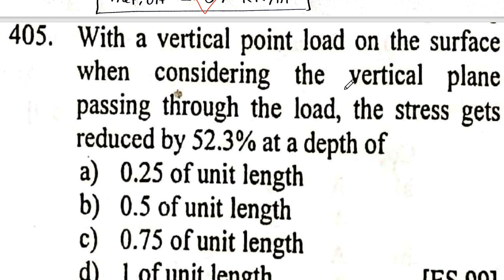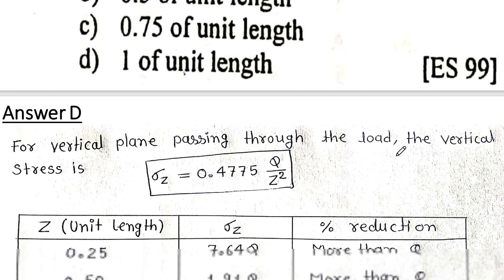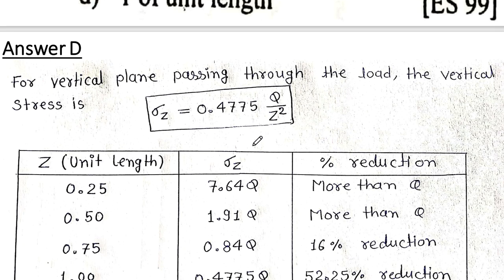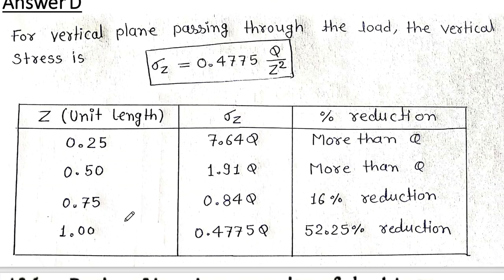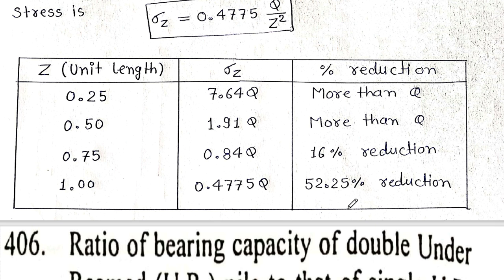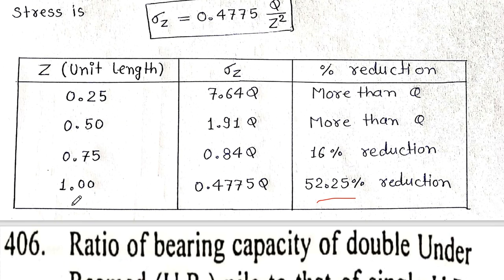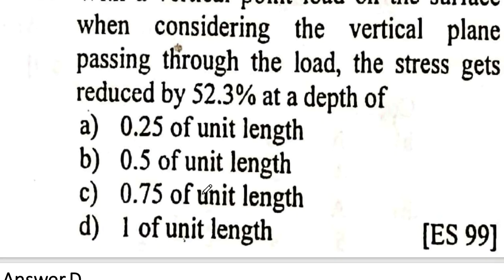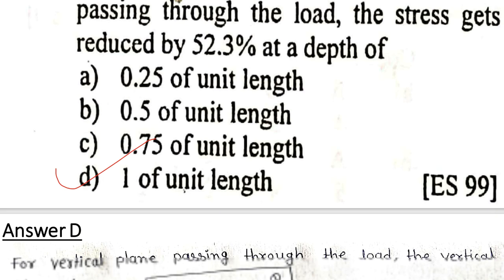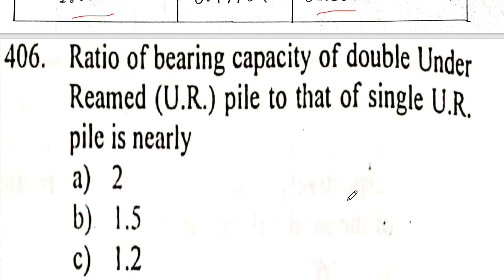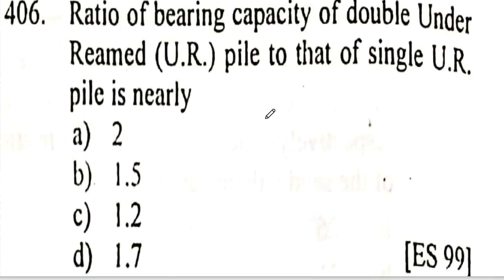Next question: on a vertical plane passing through the load, the stress gets reduced by 52.3 percent at a certain depth. Using the Boussinesq formula for a vertical point load, σ equals 0.477q/z². At 52.25 percent reduction, the answer corresponds to option D.